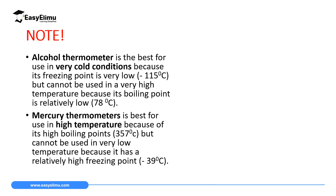An important note is that an alcohol thermometer is best for use in very cold conditions because it has a relatively low freezing point of about negative 115 degrees Celsius. However, it cannot be used at very high temperatures because its boiling point is only 78 degrees Celsius. Mercury, on the other hand, has a high boiling point of 357 degrees Celsius but cannot be used in very low temperatures due to its relatively high freezing point. So use mercury for high temperatures and alcohol for low temperatures.